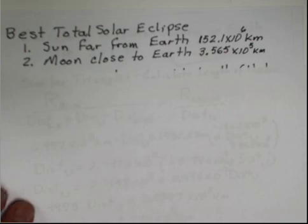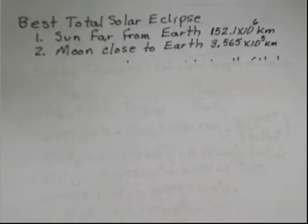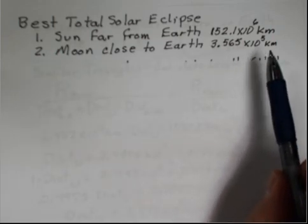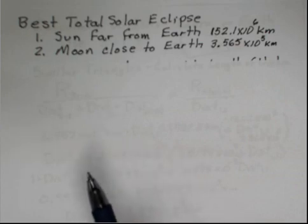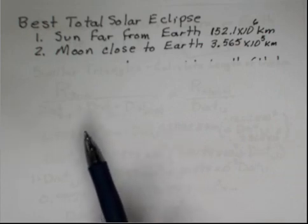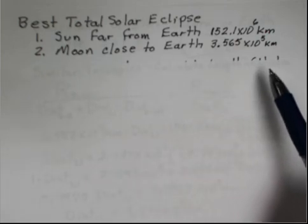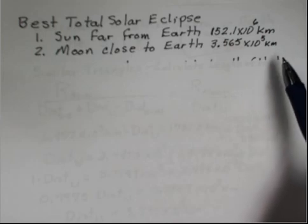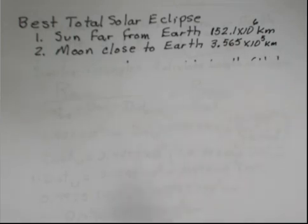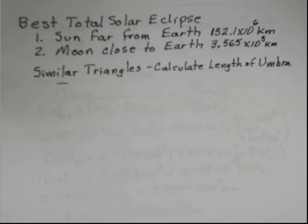To get our best total solar eclipse, the Sun should be far from the Earth. So this would be aphelion, and the distance is given on the page here, 152.1 million kilometers. And to make the Moon have a big angular size on the sky, the Moon should be close to the Earth. This would be perigee, 3.565 times 10 to the 5th kilometers, I believe, is the closest perigee to the Earth. NASA website has a little bit bigger number that I think is more of an average perigee. So we're going to use similar triangles to calculate the length of the umbra.